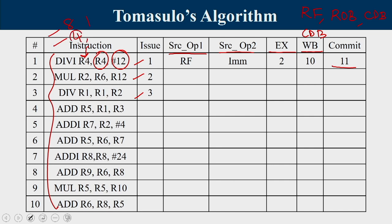The first instruction is a division. It is issued at cycle 1. Both operands — R4 and an immediate value #12 — are available in the register file, so execution starts at cycle 2. Division takes 8 cycles, so execution runs cycles 2 through 9. At cycle 10, the result is written to CDB and reaches the reorder buffer. At cycle 11, the instruction is committed.